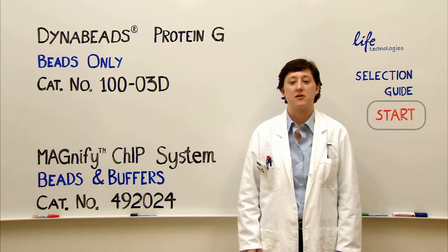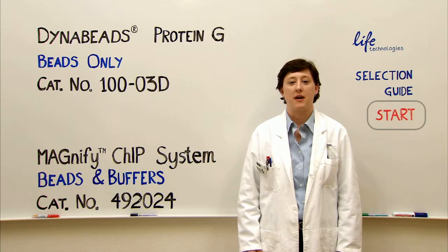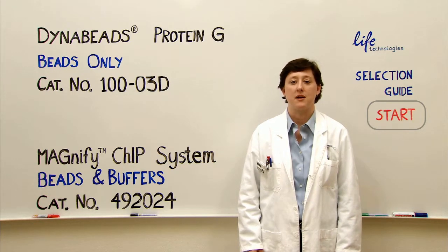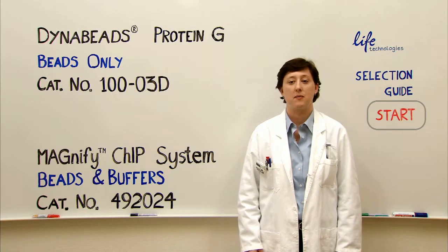DynaBeads Protein G is an excellent choice for chromatin immunoprecipitation. For maximum flexibility, I recommend that you use the Protein G beads along with your own buffers if they've already been optimized for your experimental setup.